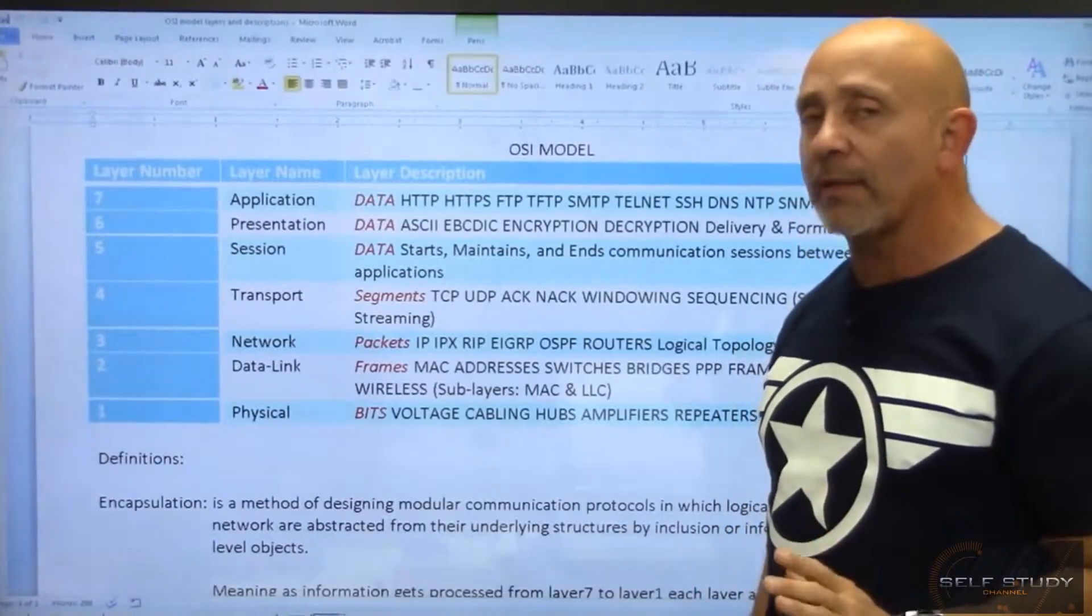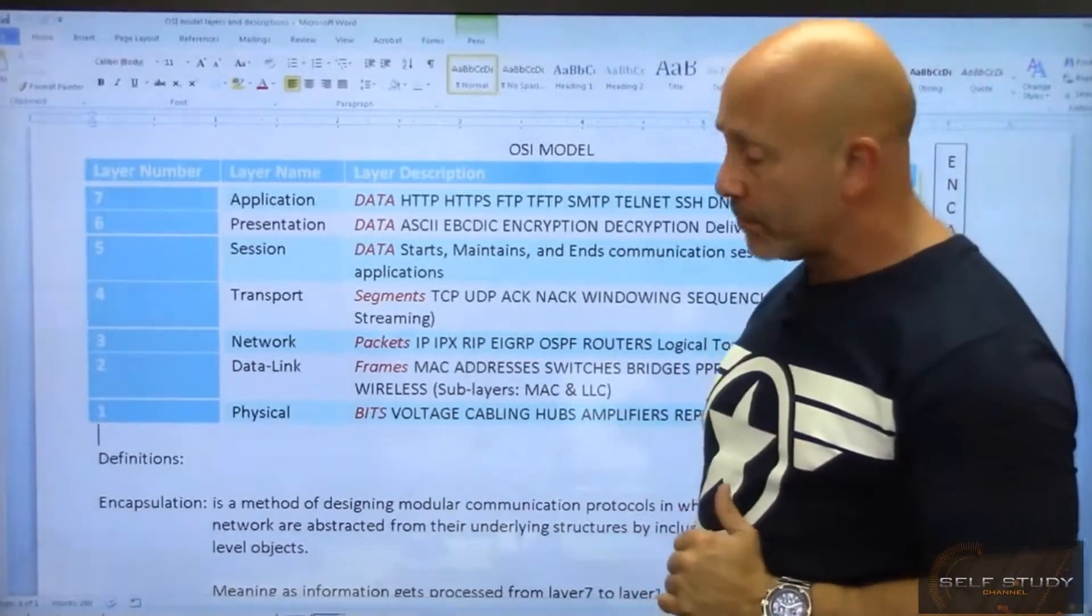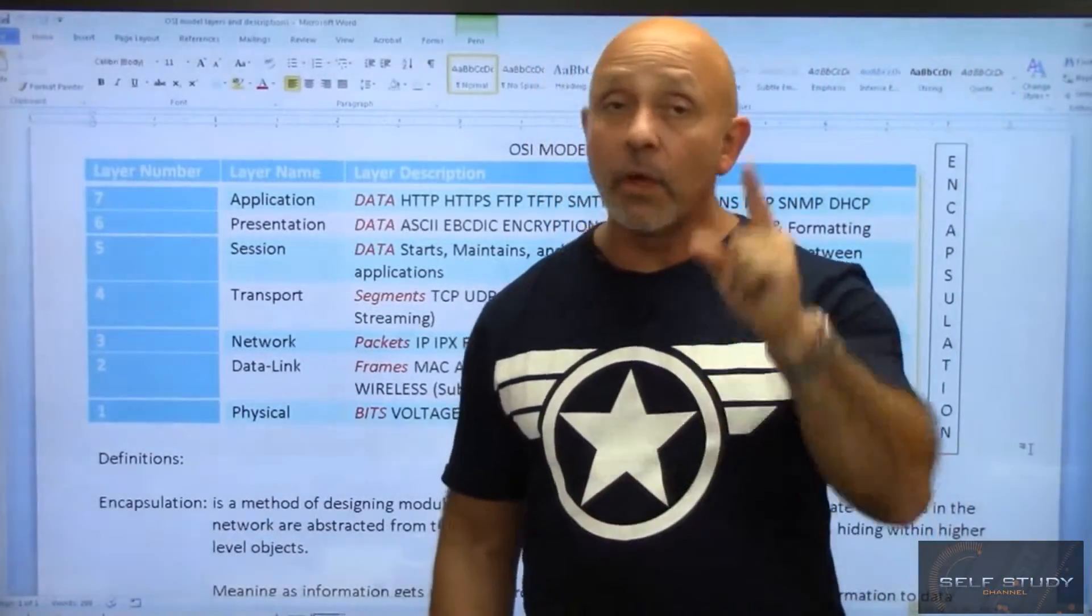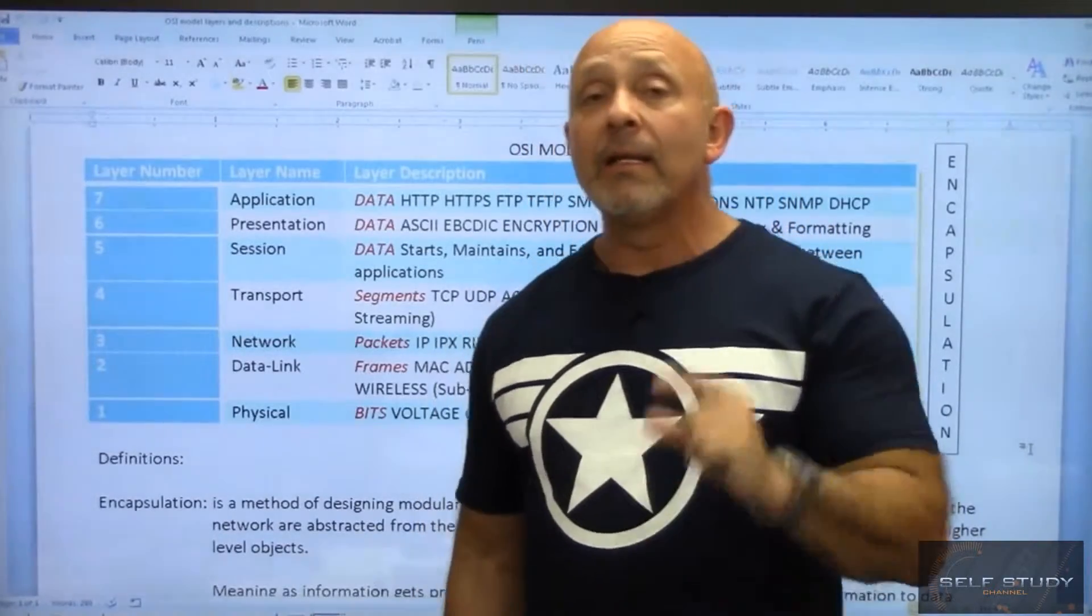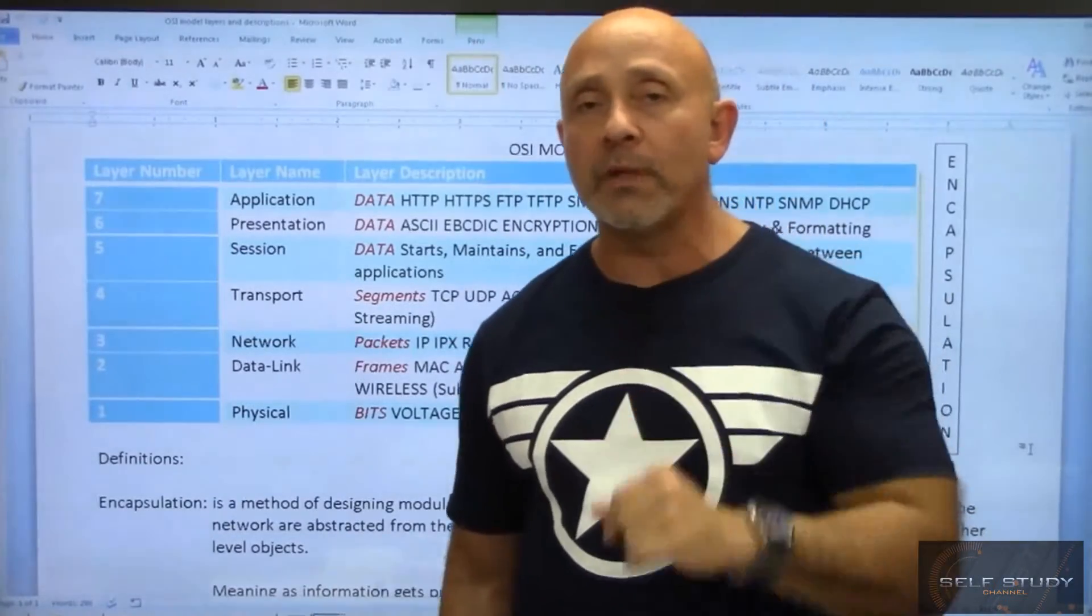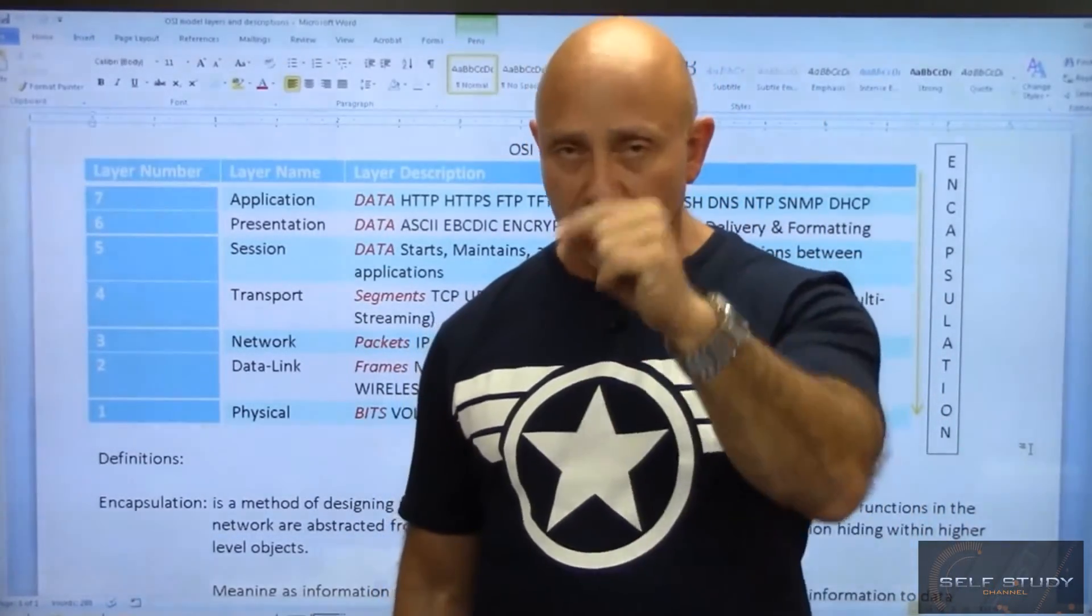So if you get a question like that, remember, the lower encapsulates the upper. Those are your upper three layers. Next video, I told you, little bites, little morsels. Next video, we're going to go ahead and talk about the four lower layers. And those are the ones that are called the meat and potatoes. I'll see you in the next one.